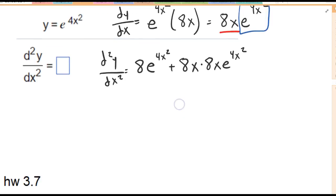So simplifying this, we have 8e to the 4x squared plus 64x squared e to the 4x squared.